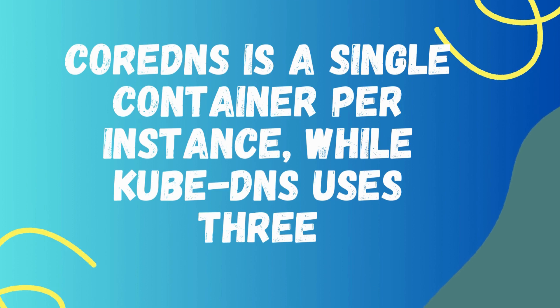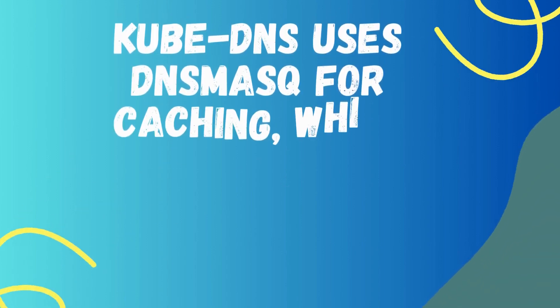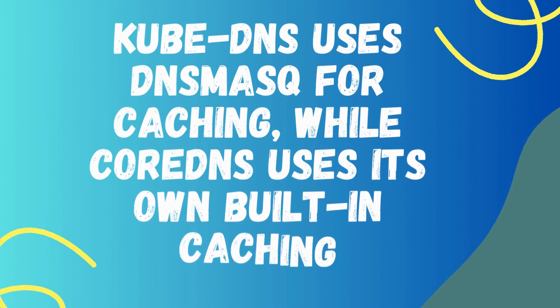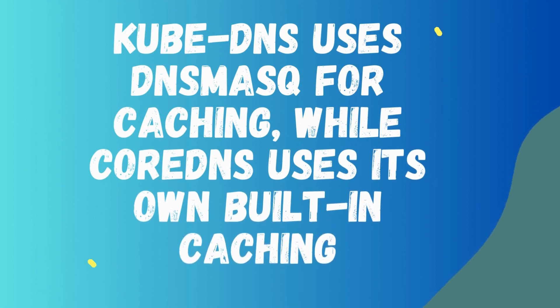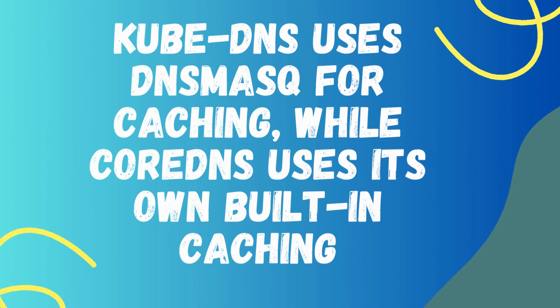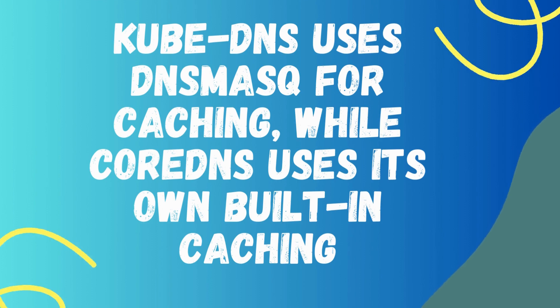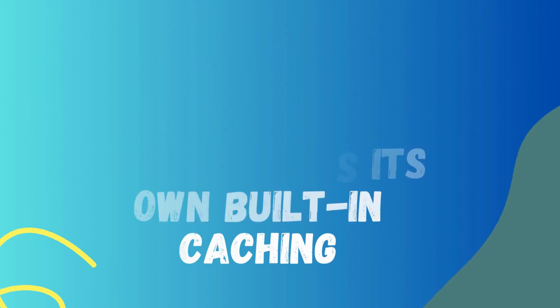Point number two: KubeDNS uses dnsmasq for caching while CoreDNS uses its own built-in caching. CoreDNS can cache more queries and respond to them more quickly. CoreDNS uses its own built-in caching system, which can cache more queries than KubeDNS, which uses dnsmasq. This means CoreDNS can respond to queries more quickly.